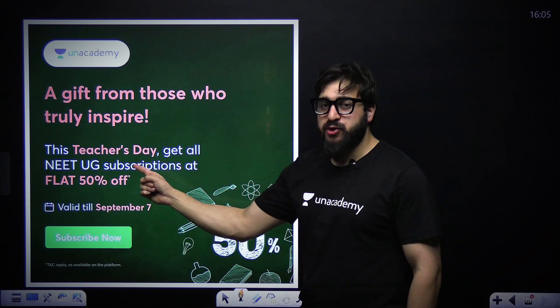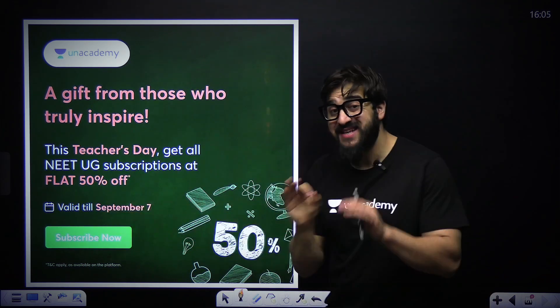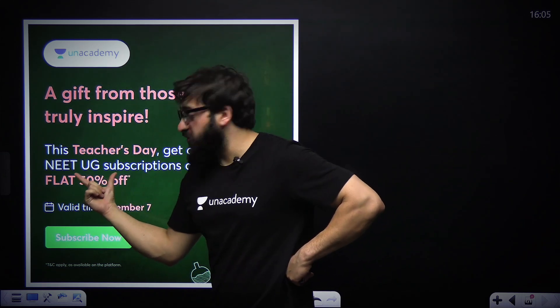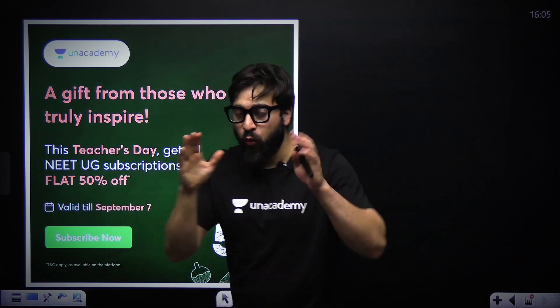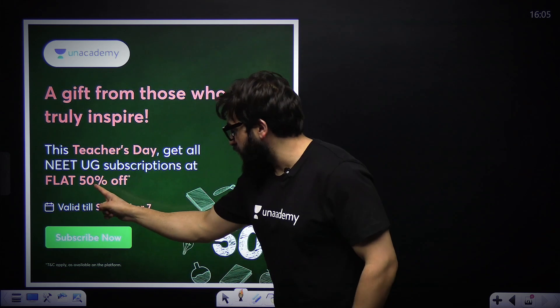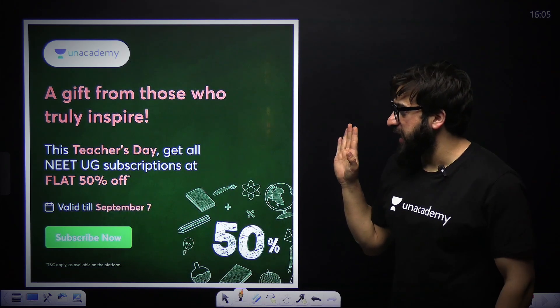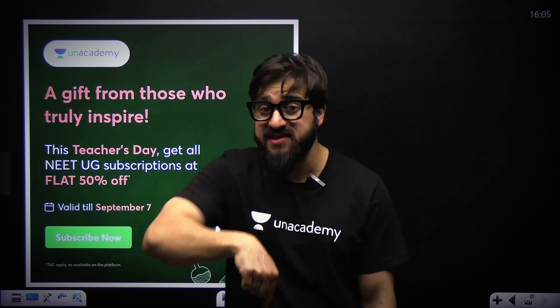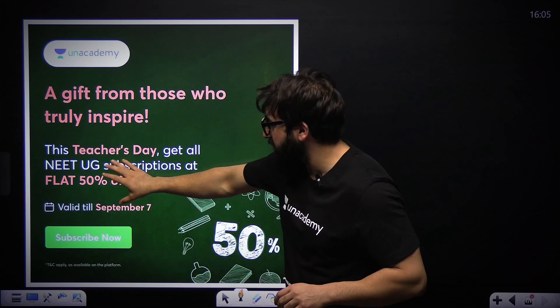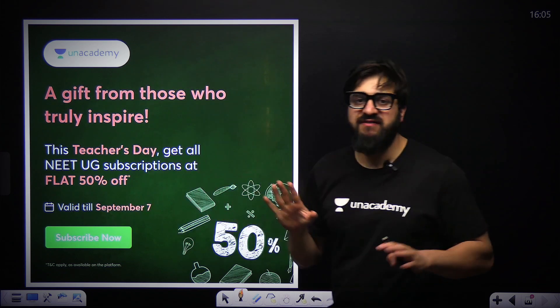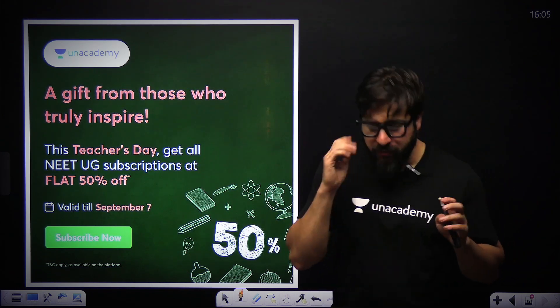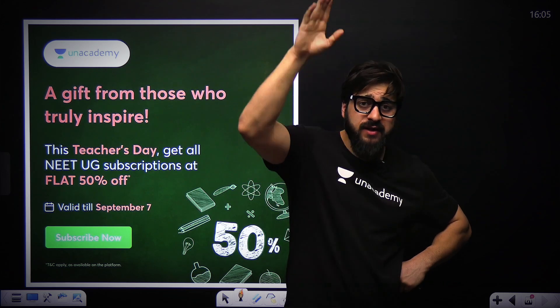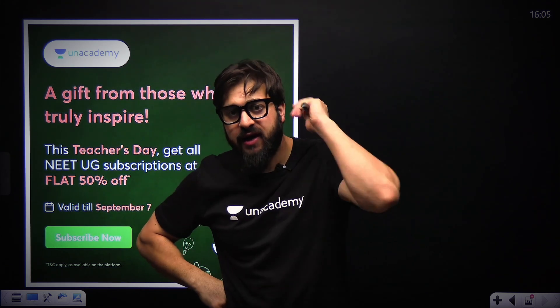Unacademy subscription on teacher's day, this is valid till 7th September only. There will be flat 50% off, whatever be the price. So there will be flat 50% off on the Unacademy plus subscription. Join it as soon as possible. The link is in the description below. Click onto that link and you'll get the flat 50% off. This is valid till 7th September only. So thank you so much. This was all about it. Make sure you hit the like button and do share this video with your friends. Take care and bye-bye.